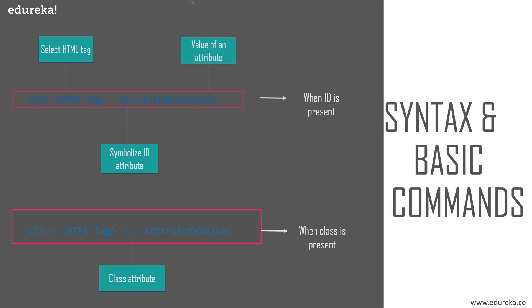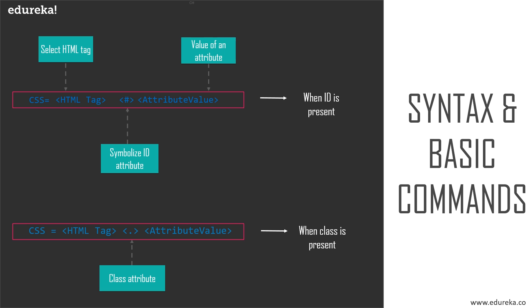Let's take a look at the syntax and a few basic commands. The CSS selector syntax is: HTML tag, followed by a unique symbol used to locate the element, followed by the value of the attribute. This syntax applies when the ID attribute is present. If the class attribute is present instead, we use a dot between the HTML tag and the value of the attribute.